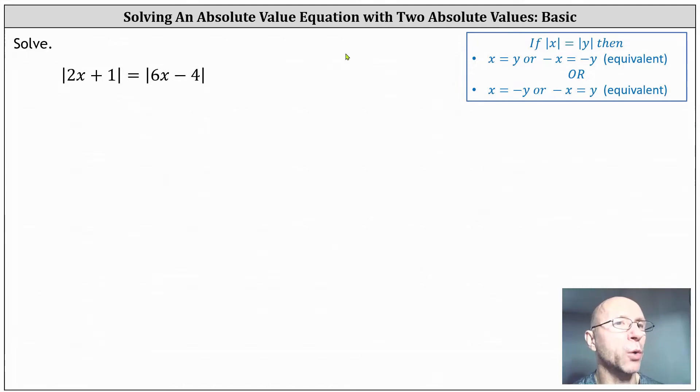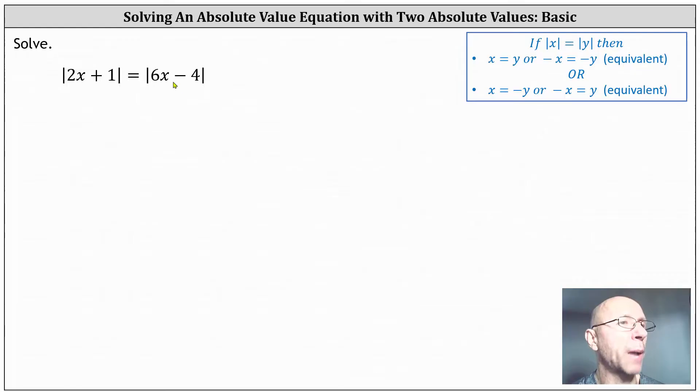We want to solve the given absolute value equation. We have the absolute value of the quantity 2x plus 1 equals the absolute value of the quantity 6x minus 4.